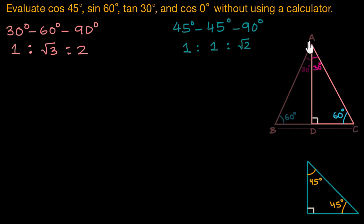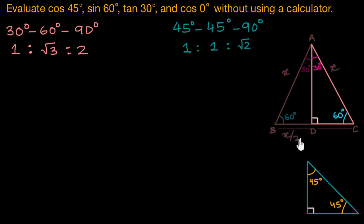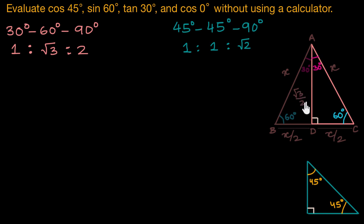Now as we have an equilateral triangle, each side would also be equal. So if AB is X units, AC would also be X units and BC would also be X units. But as AD divides BC into two equal halves, BD would be X/2 and DC would also be X/2 units. Applying Pythagoras theorem in triangle ADC, we can find the length of AD which would come out to be (√3/2)X.